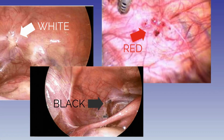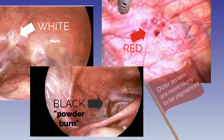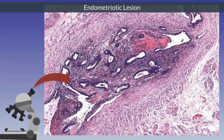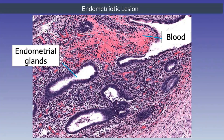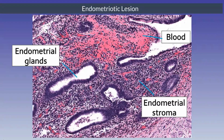Lesions may be red, white, or black, also known as powder burn lesions. The older the lesion is, the more likely it is to be pigmented. Lesions can be biopsied and sent to pathology. Zooming in, a typical endometriotic lesion shows endometrial glands and blood in a background of endometrial stroma.